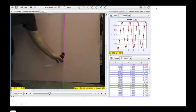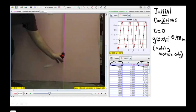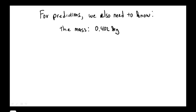We know to predict motion we need the initial position and velocity. We know how to do this. We read off the initial position from our tracker analysis. Here at the starting time of the observation which we will call t equals zero the y position is as shown circled here. Moreover since the mass is released from rest we know that the initial velocity is zero. To make predictions we'll also need to know the mass of the object. We measure that independently to be 0.402 kilograms.